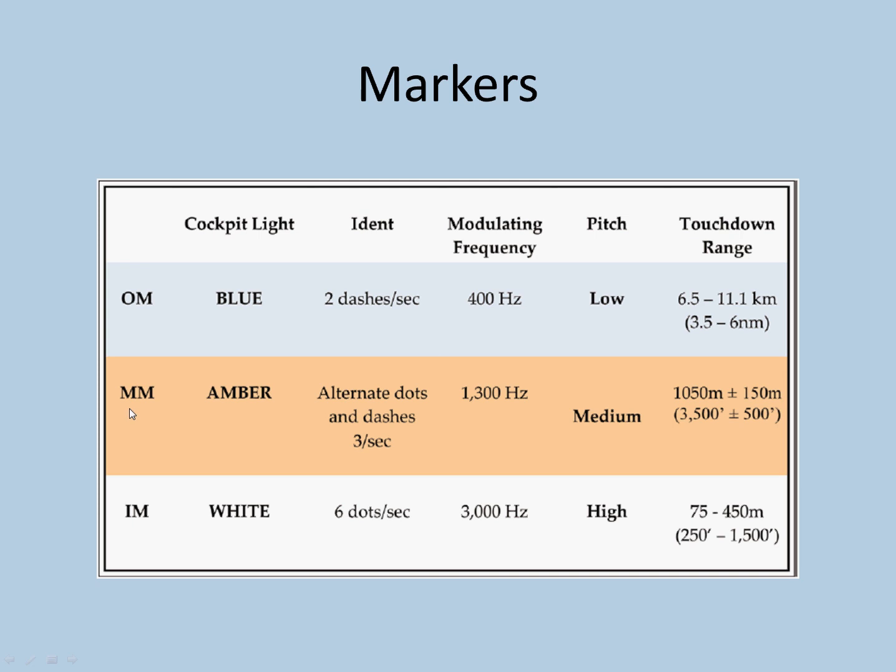Middle marker: amber, alternate dots and dashes, three per second, frequency is 1300 Hz, pitch is medium. And it is indicating that you are 1050 m plus or minus 150 m to touchdown.